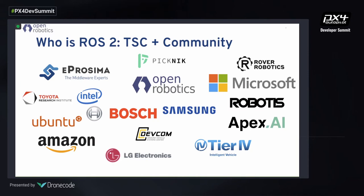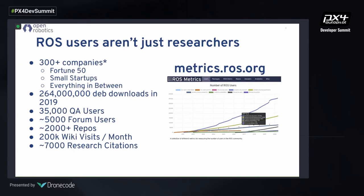To give you a sense of scale of what's happening in the ROS community: we have well over 300 companies, many of them big, many small as well. Last year we had over 260 million binary downloads of our Debian packages. We have 35,000 users on our Q&A forums, 5,000 users on our Discourse instance, over 2,000 repositories indexed, and hundreds of thousands of monthly visits on our websites. And if you're doing research, there are also over 7,000 citations of our first paper from 2009. It's a great community — I encourage you all to get out and explore it.